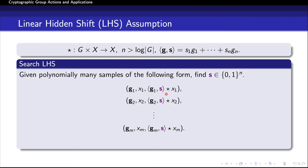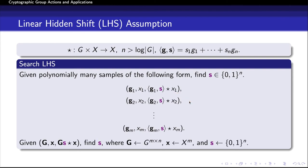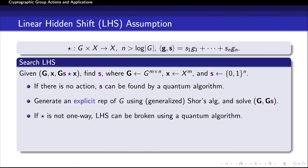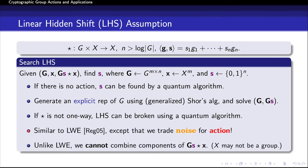Let's see a few observations regarding the search LHS problem. First, if there is no action, the secret S can be found by a quantum algorithm: we can generate an explicit representation of the group G by a generalized Shor's algorithm, then use the resulting representation to solve a linear system of equations. Therefore, if star is not one-way, LHS can be broken using a quantum algorithm. As some may notice, the LHS assumption is similar to LWE, except that we use the group action instead of noise to computationally hide the secret. Unlike LWE, we cannot combine components of G·S star X because X may not be a group. The decision version of LHS states that (G, X, G·S star X) is computationally indistinguishable from all random elements.